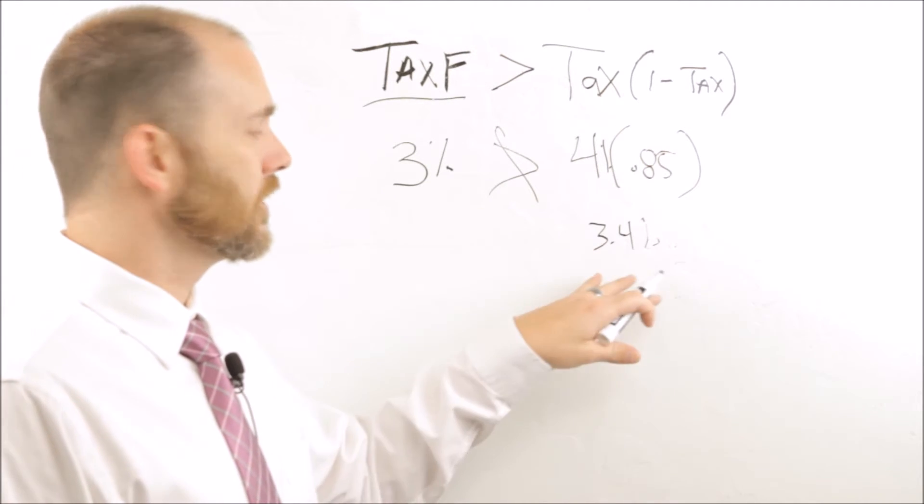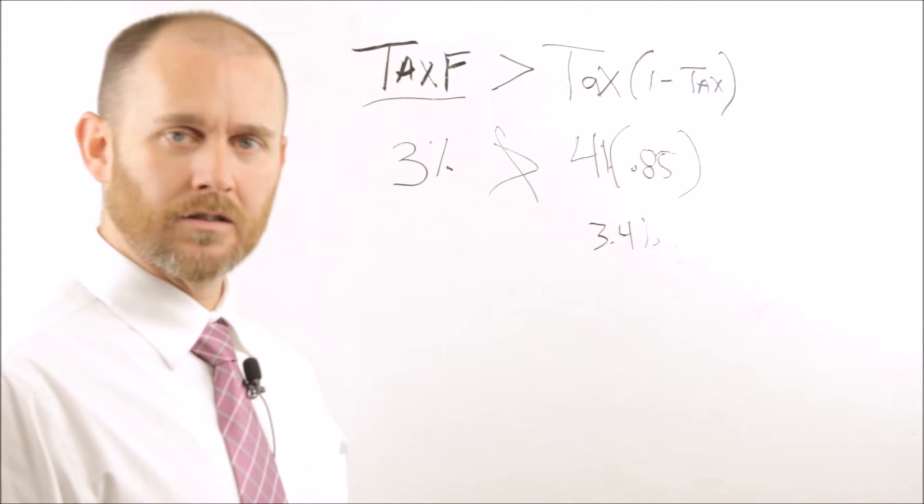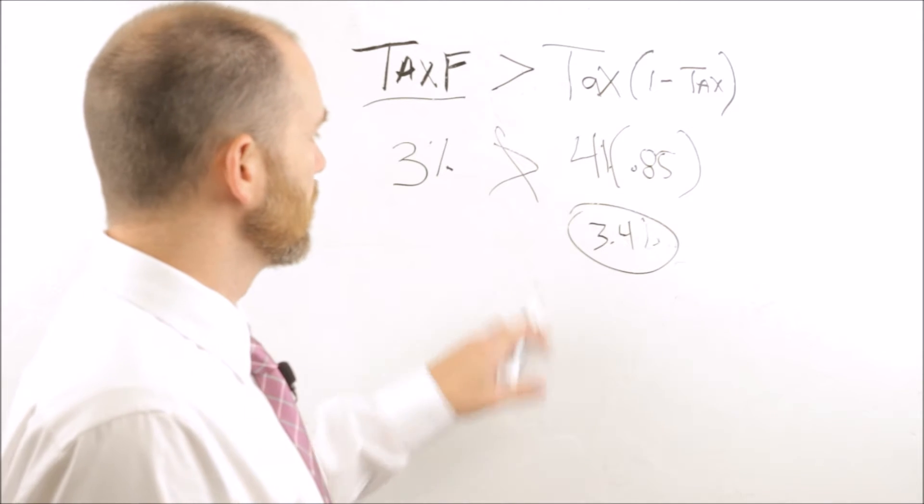So even though it's only a 1% difference, you're still better off to have invested in the corporate bond at 4% and pay the taxes on that and still generate a higher return on your investment.